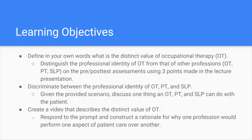Some learning objectives for today's course: you will be able to define in your own words what is the distinct value of occupational therapy. You'll be able to discriminate between the professional identity of OT, PT, and SLP. At the end, you can create a video on Flipgrid that describes the distinct value of OT when given a prompt and a case study, and rationalize why one profession would perform one aspect of patient care over another.